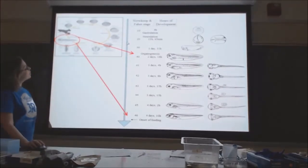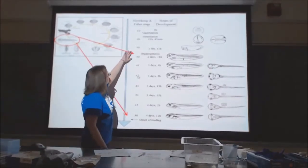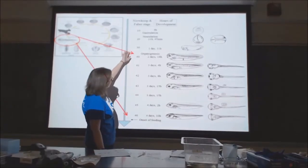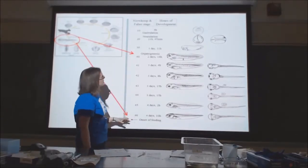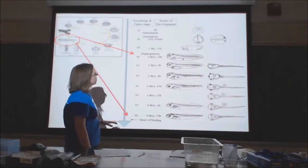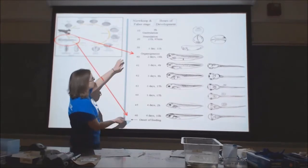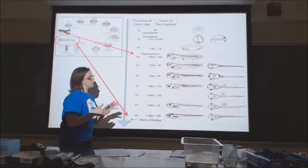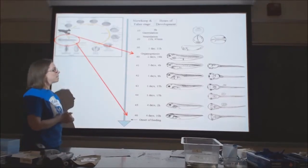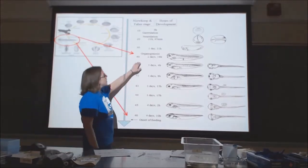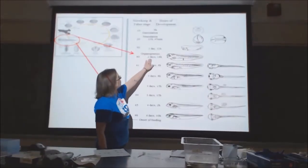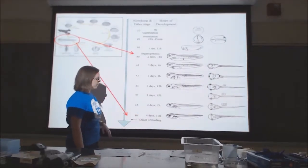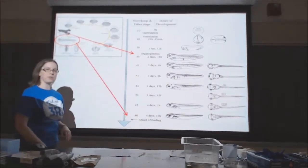In Xenopus, there is a standardized staging system numbered from 0 to 46. Organ morphogenesis occurs largely between stages 40 and 46 — these were the stages I was interested in. Stage 40 is at about two and a half days post-fertilization, and stage 46 is at about four and a half days post-fertilization.